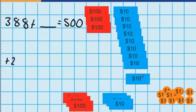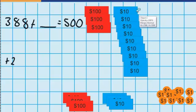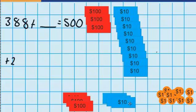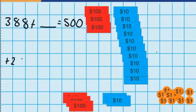I'll move that up. Now I've got 1, 2, 3, 4, 5, 6, 7, 8, 9 $10 notes. So I ask myself: how many more $10 notes do I need to add? The answer is one. I'll move that up. Just like last time, I need to record how much I added — I just added $10.